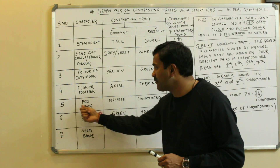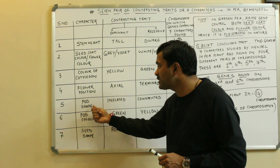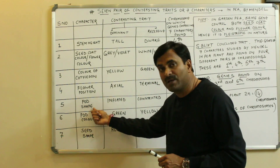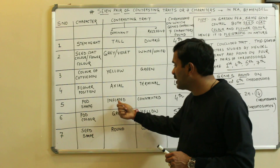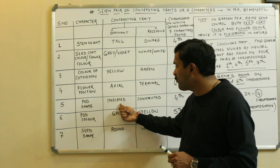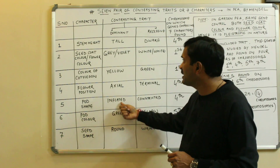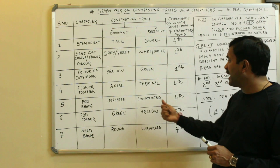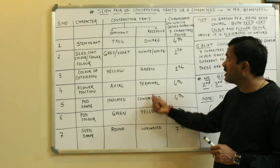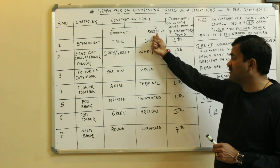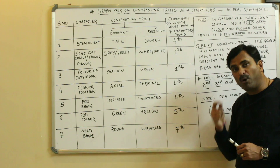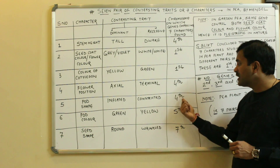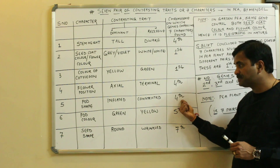Character number five: pod shape. For pod shape, inflated is the dominant trait and constricted is the recessive trait. The gene controlling pod shape is found again on chromosome number four.